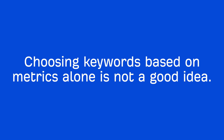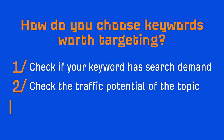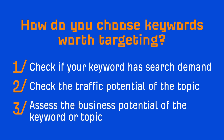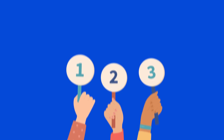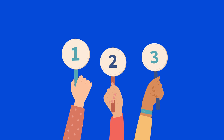Choosing keywords based on metrics alone is not a good idea, which is why the rest of the checkpoints are meant to ground you. The next point on our checklist is to assess the business potential of the keyword or topic. Business potential simply represents the value a keyword has to your business, and that value comes down to your niche as well as your business model. An easy way to do this is by assigning scores between 1 to 3 to keywords you're researching — the higher the number, the more important the topic is to your business.